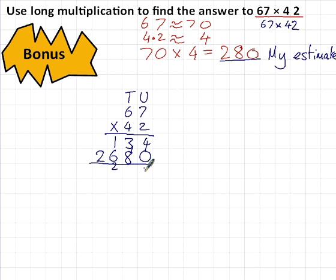Okay, 4 plus 0 is 4. 3 plus 8 is 11. 1 plus 6 plus 1 is 8. 2 plus nothing is 2. Answer: 2, 8, 1, 4.